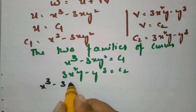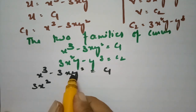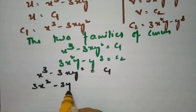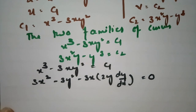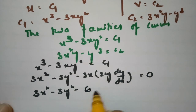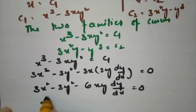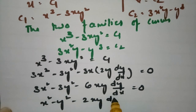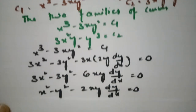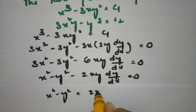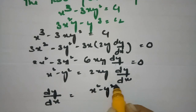For the first family, x³ - 3xy² = c1, we differentiate with respect to x. Applying the product rule: 3x² - 3y² - 6xy(dy/dx) = 0. Dividing throughout by 3 gives x² - y² - 2xy(dy/dx) = 0.